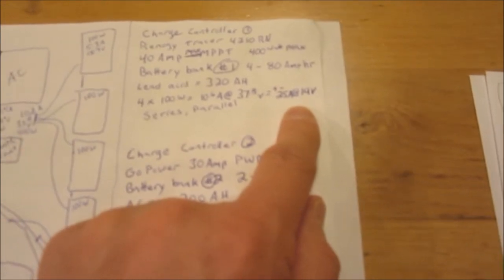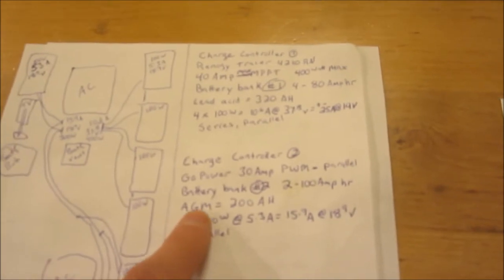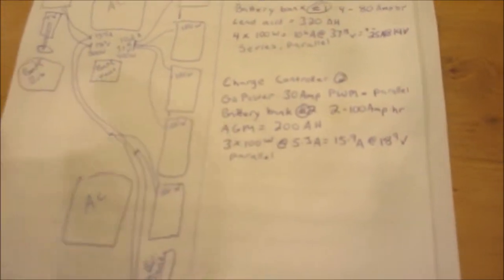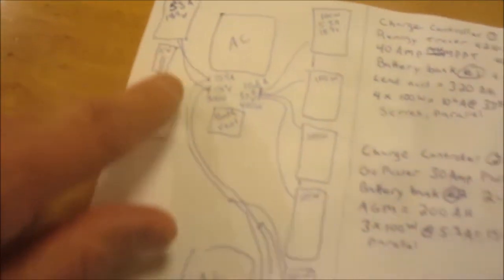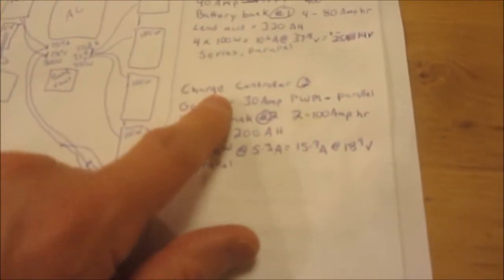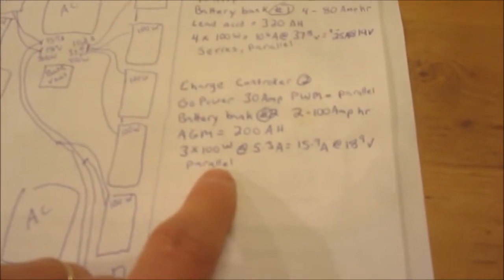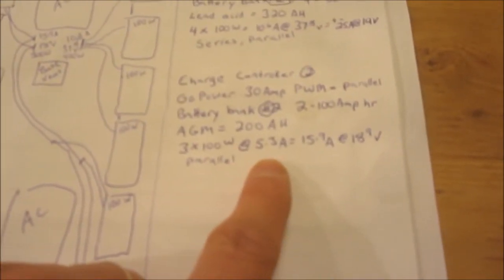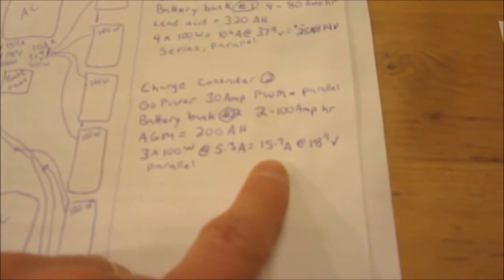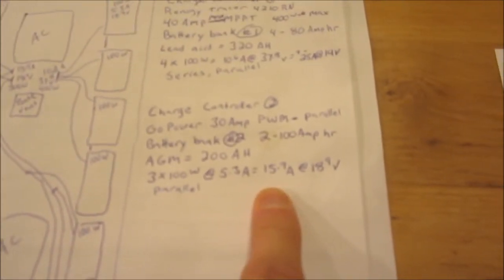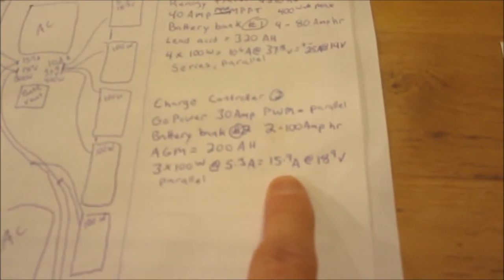My second system is 300 watt Renogy, so that's putting out 3.5 amps each and we are in parallel, so that's just stacking on the amps. That's times three, 15.9 amps at 18.9 volts.